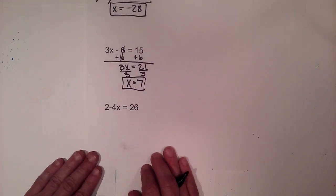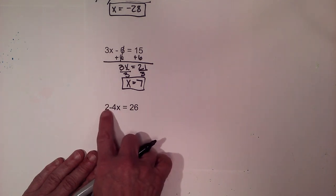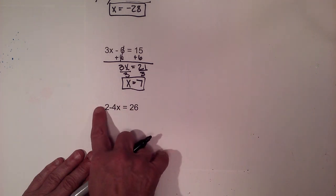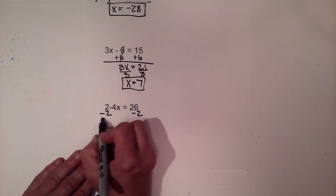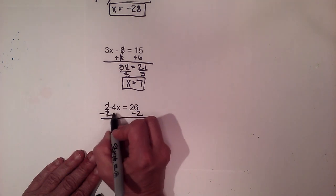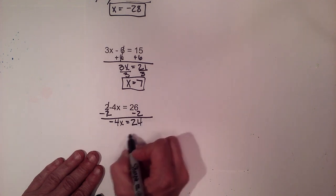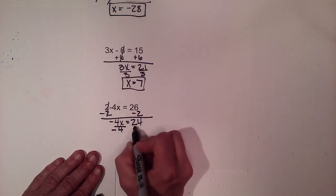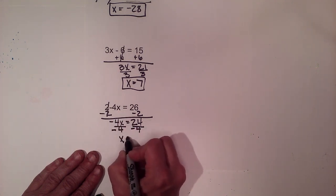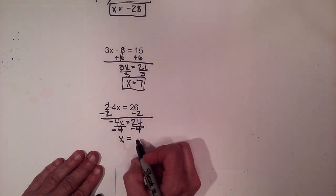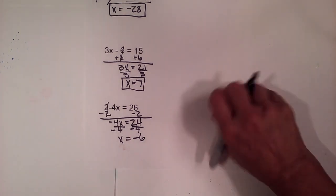This is another two-step equation, but this time our variable is negative. We want to isolate x, so we move the two to the other side. Be careful — the two is actually positive, so we have to subtract it. Two minus two is zero, we bring down the negative four, and twenty-six minus two is twenty-four. We divide both sides by negative four, because a negative divided by a negative is positive, giving us x equals negative six.